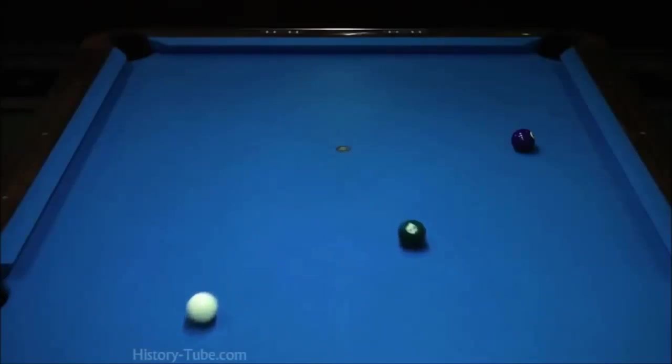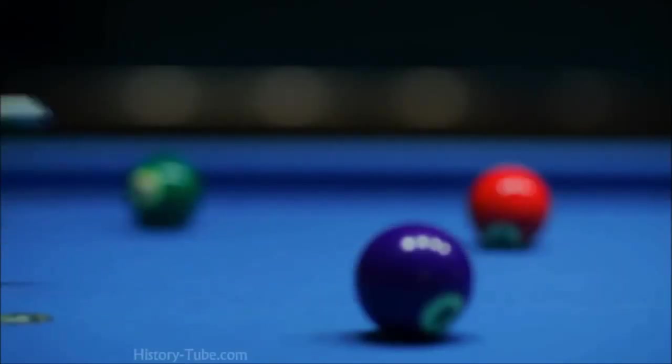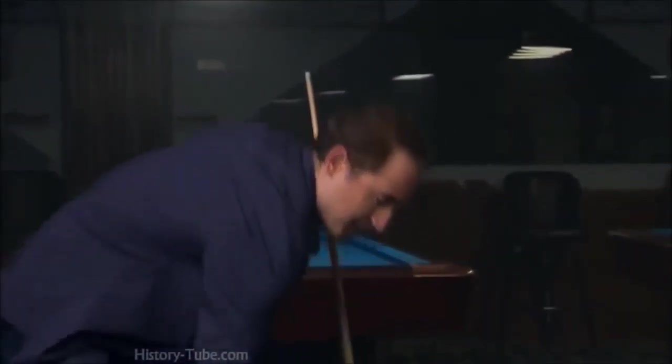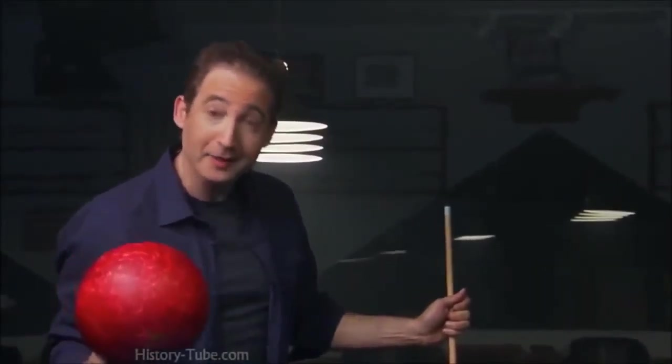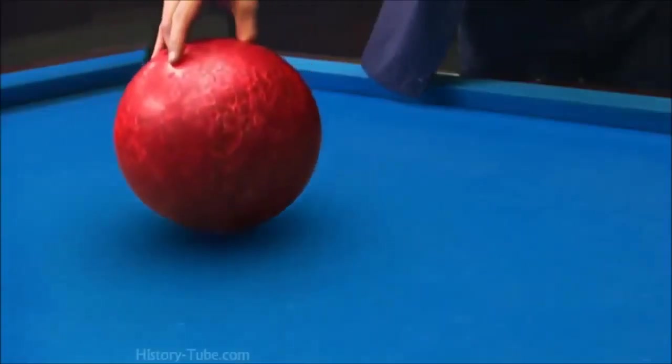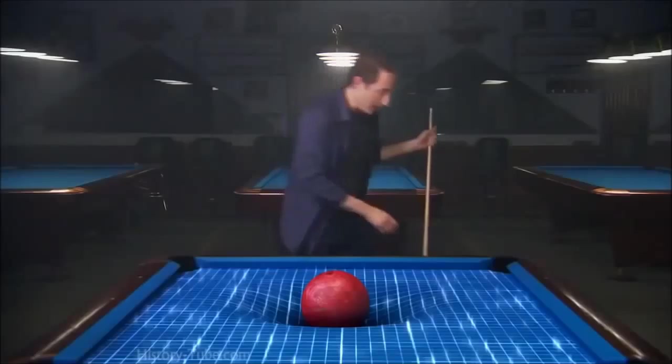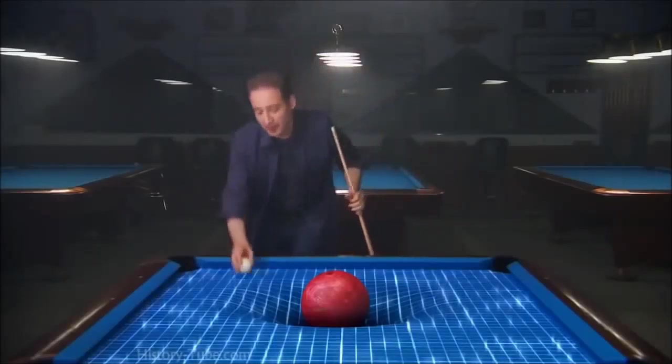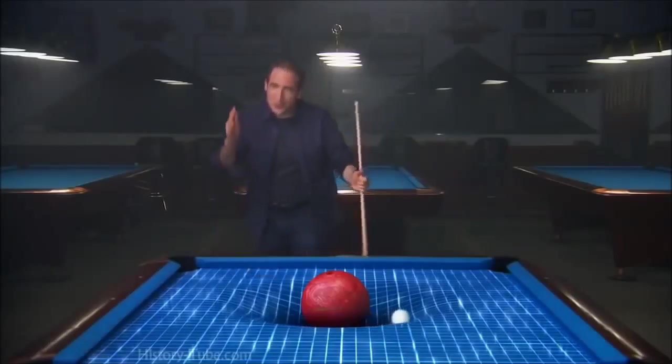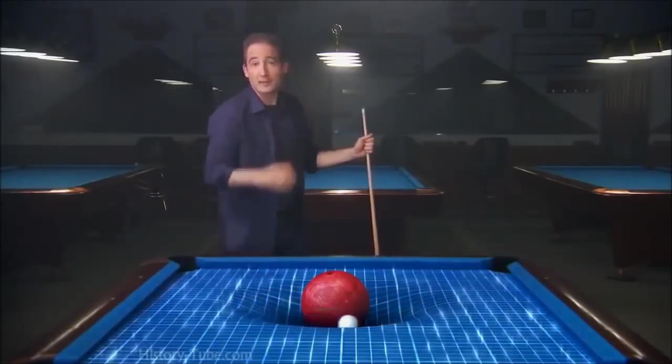But if space is like a fabric that can stretch and bend, well, this may seem a little strange. But watch what happens if I put something heavy on the stretchy space-time fabric. Now, if I take my shot again, the ball travels along an indentation in the fabric that the heavier object creates.